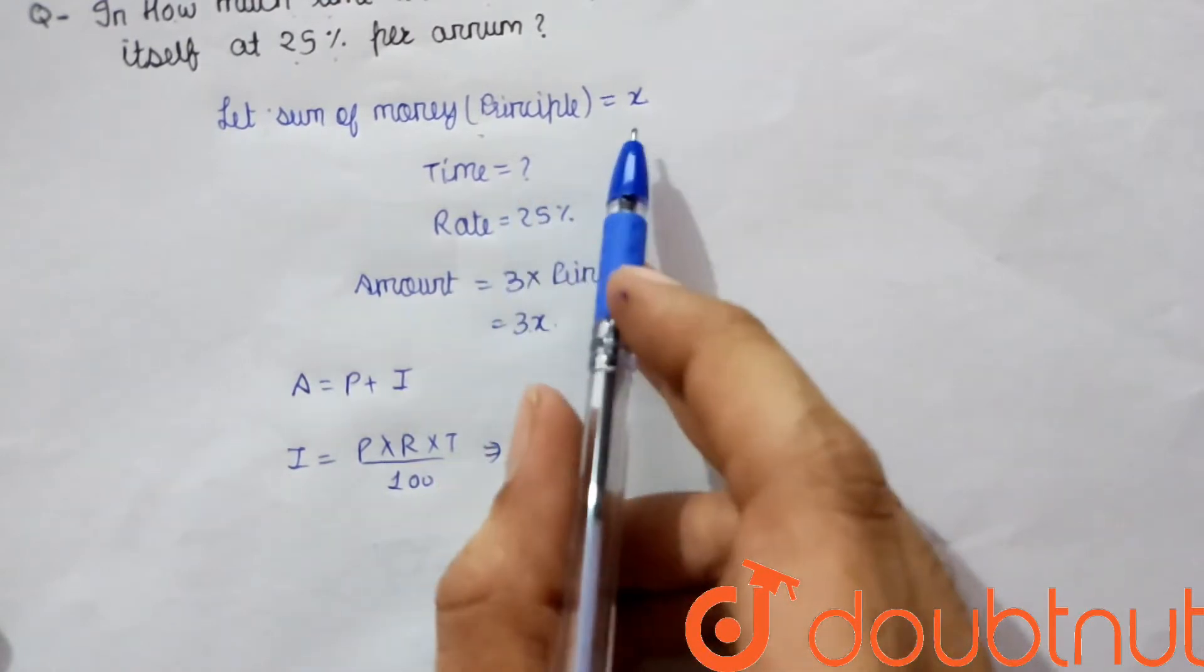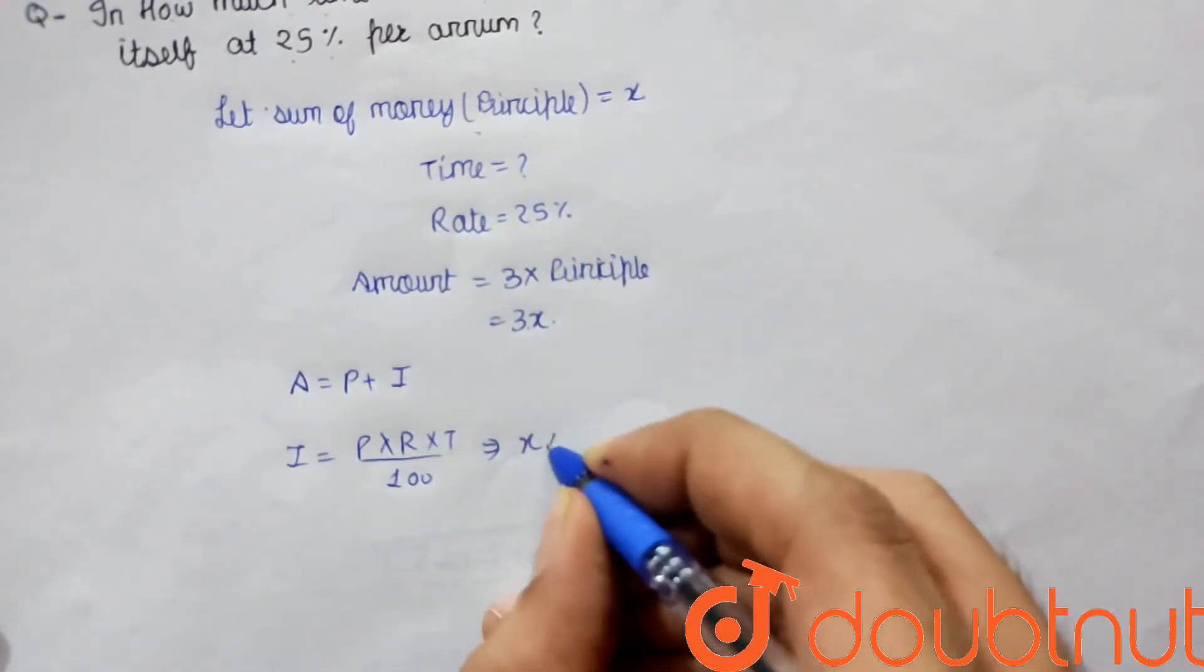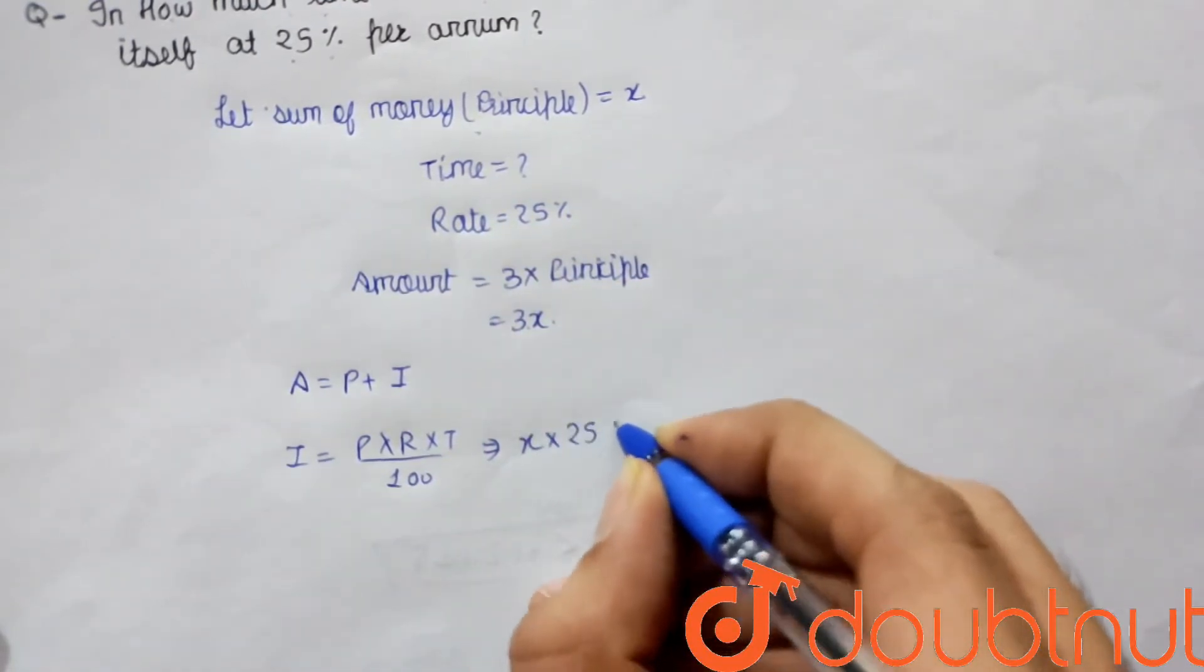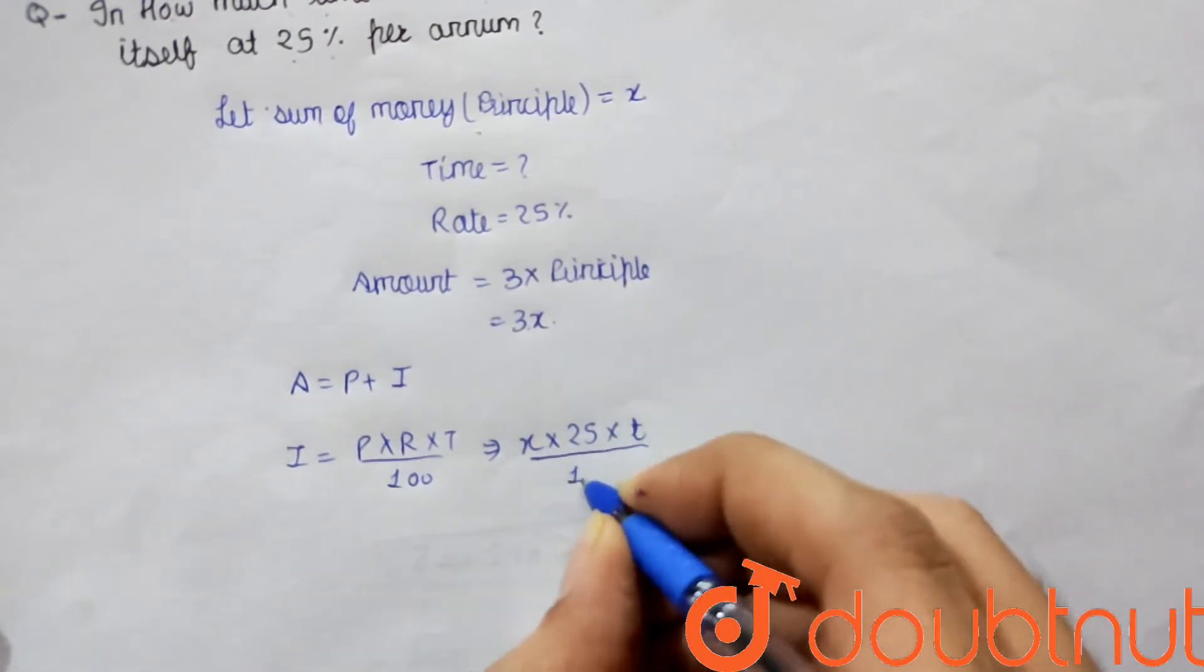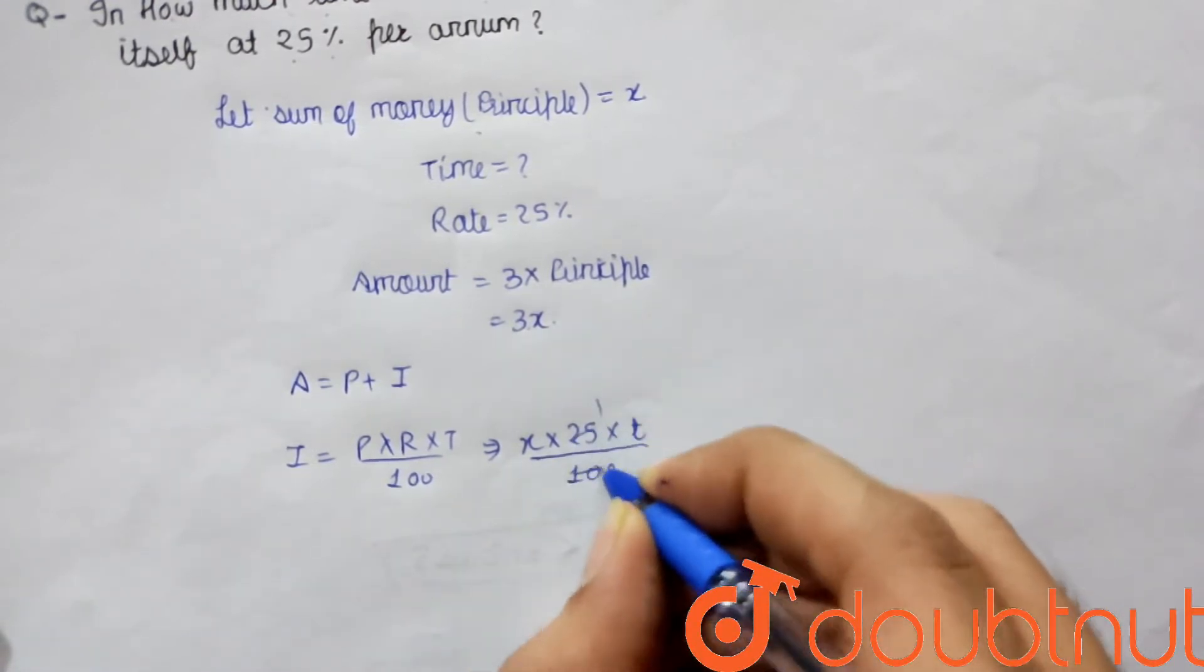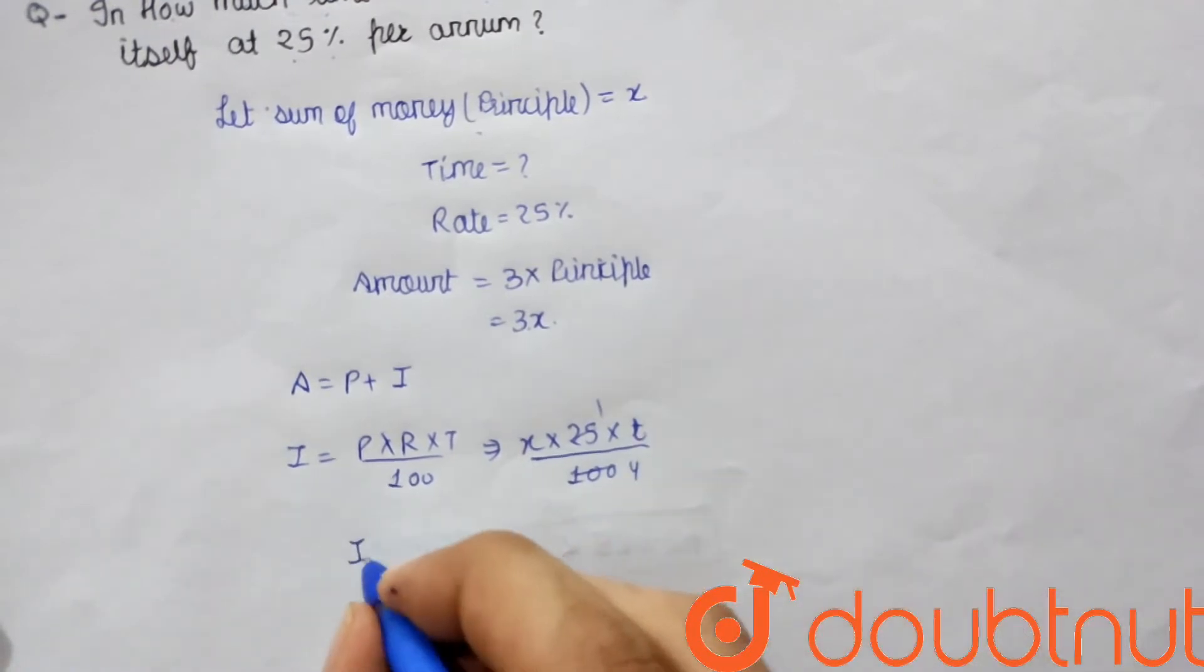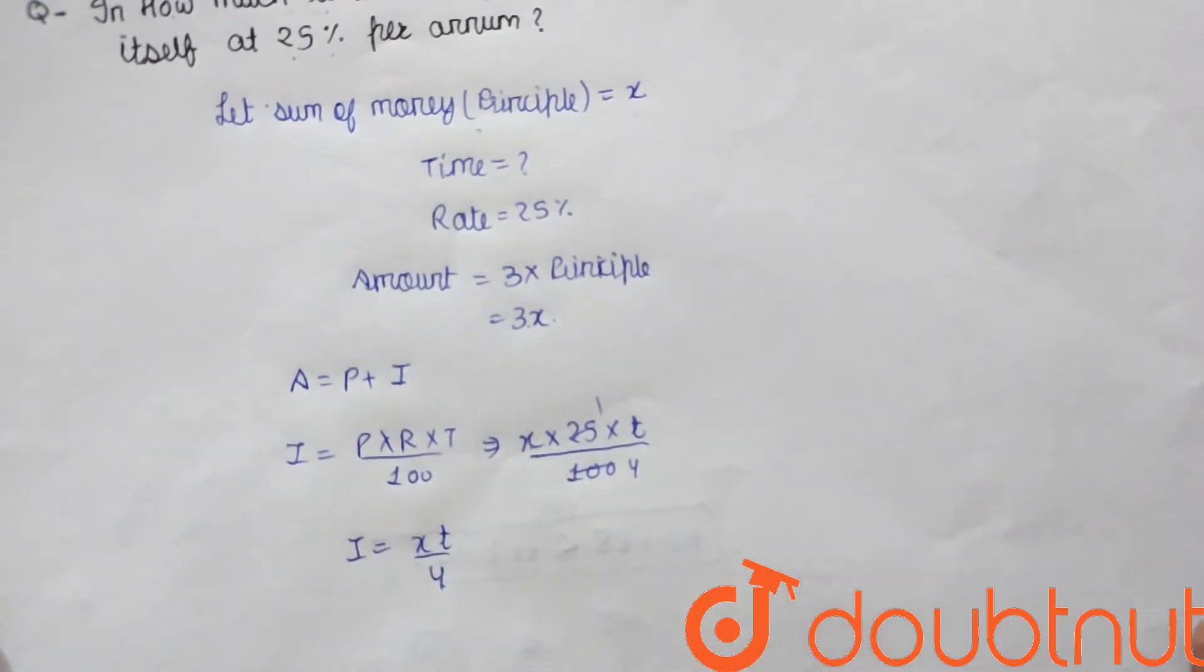Principal is X, rate is 25, time is T, divided by 100. So interest equals X × 25 × T ÷ 100, which simplifies to XT/4.